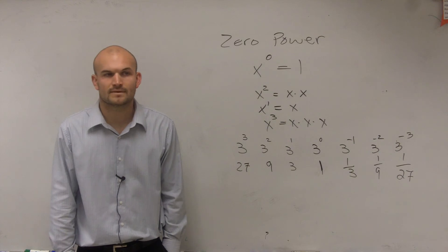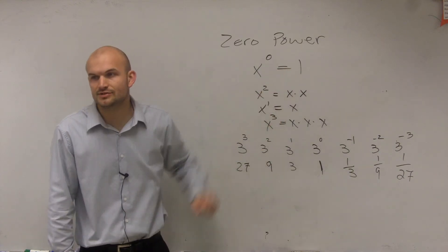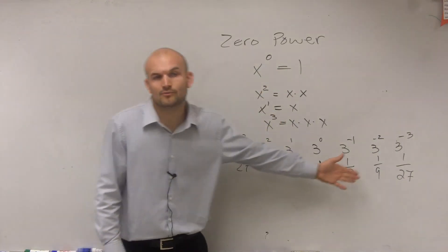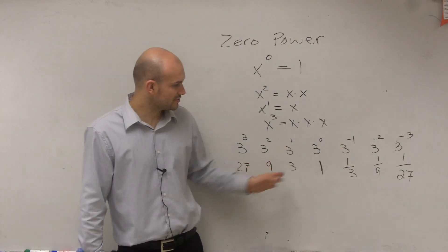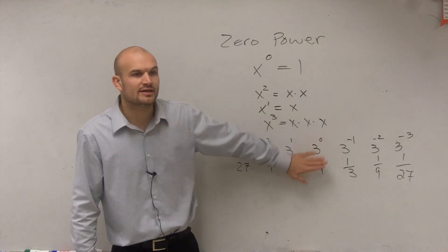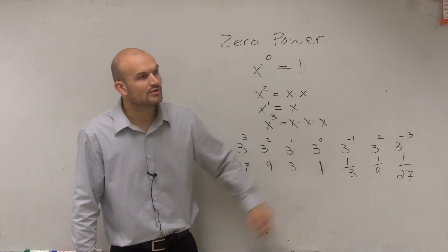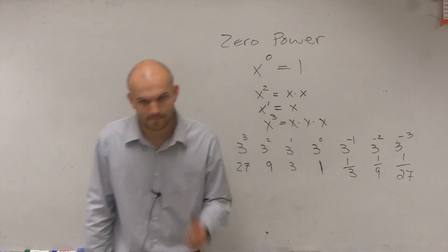Alright? So just remember any number raised to your zero power, just like how I work with the threes here, by putting them to the positive exponents and then to the negative. When you work your direction, you're going to have that place value, your number raised to the zero power, which is going to always equal 1. Alright? There you go.